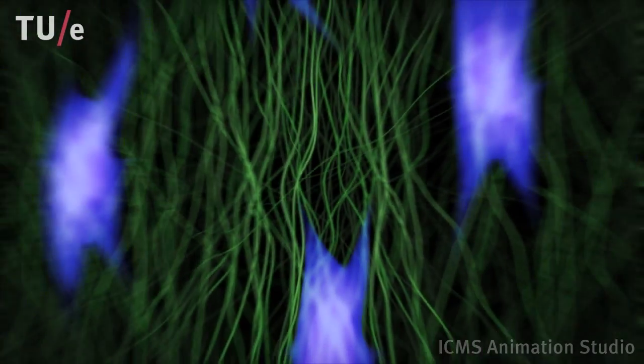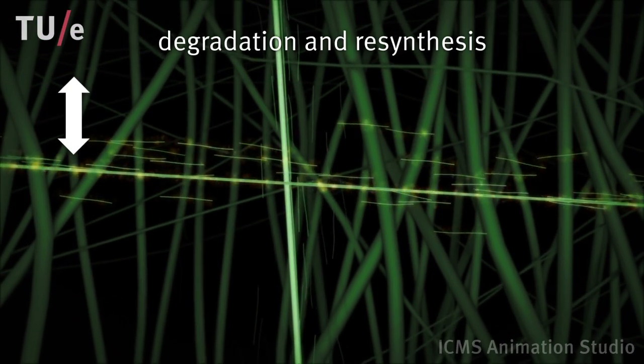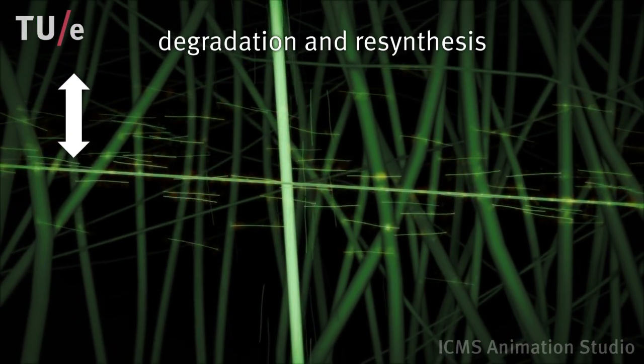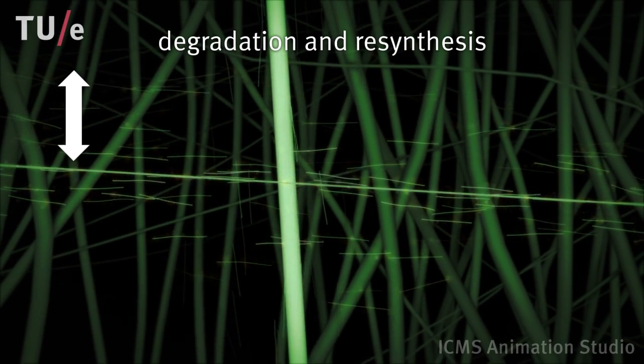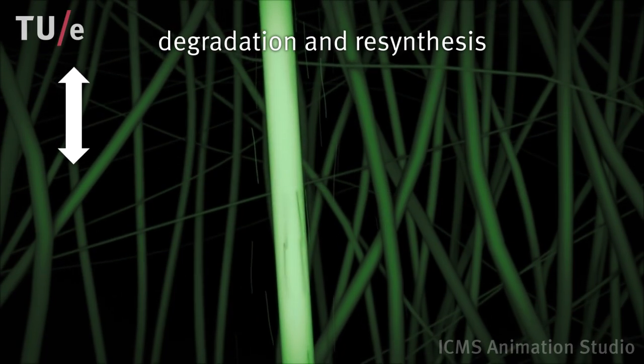Existing collagen is enzymatically degraded by cells. Collagen fibers that are not aligned in the direction of the applied forces are more prone to this degradation. Part of the degraded collagen may be reused to strengthen existing collagen fibers at other locations.